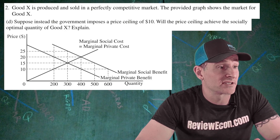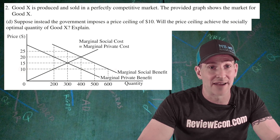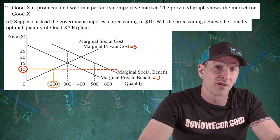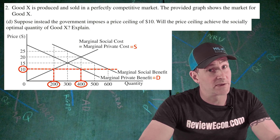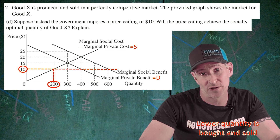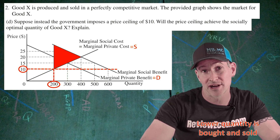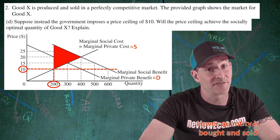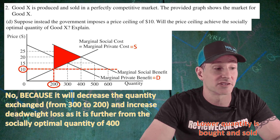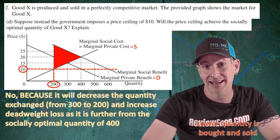For part D, we are asked whether a price ceiling of $10 will achieve the socially optimal outcome. Adding that price ceiling of $10 to the graph: the marginal private cost is the supply curve and the marginal private benefit is the demand curve, so 200 units will be the quantity supplied and 400 units will be the quantity demanded. Only the lower of the two — 200 units — will be bought and sold. With 200 units produced, we have an even larger triangle of deadweight loss, further from the allocatively efficient quantity of 400. So the answer is no, because it decreases the quantity exchanged from 300 to 200 and increases the deadweight loss.